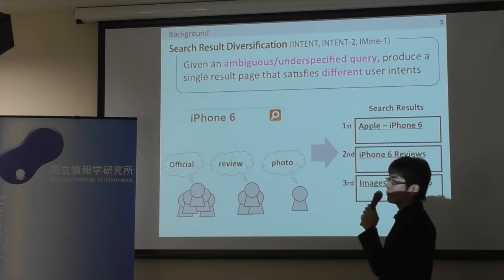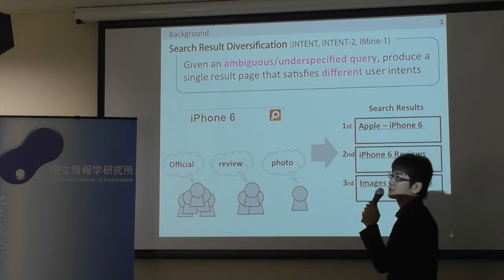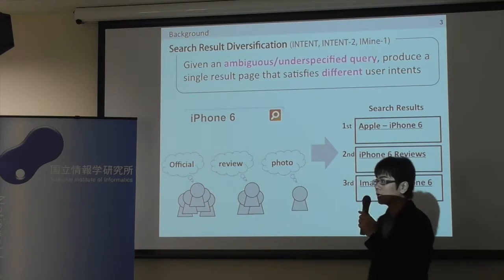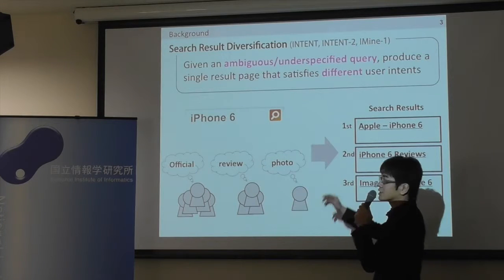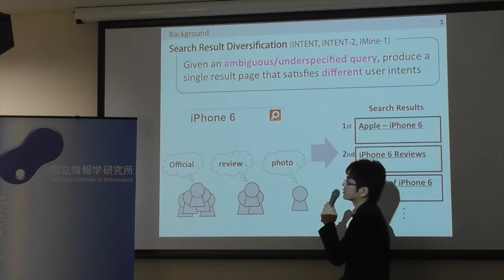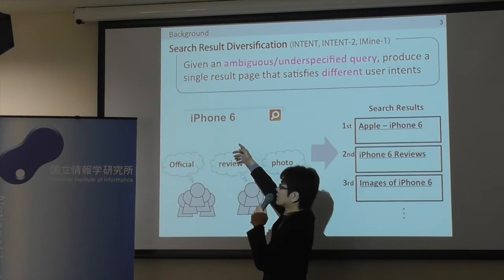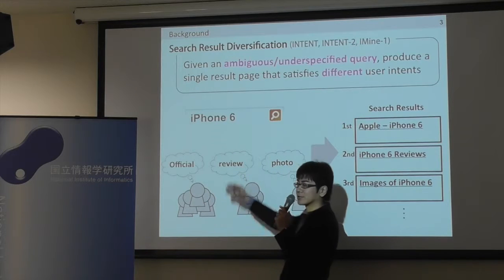We have tackled the well-known problem in IR called search result diversification. In the usual web search, the user's queries are often short and ambiguous.